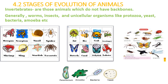Invertebrates are those animals which do not have backbones. Generally, worms, insects, and unicellular organisms like protozoa, yeast, bacteria, and amoeba are invertebrates. Some more examples are octopus, scorpion, snail, spider, shrimp, starfish, ant, bee, crab, grasshopper, butterfly, and lobster.